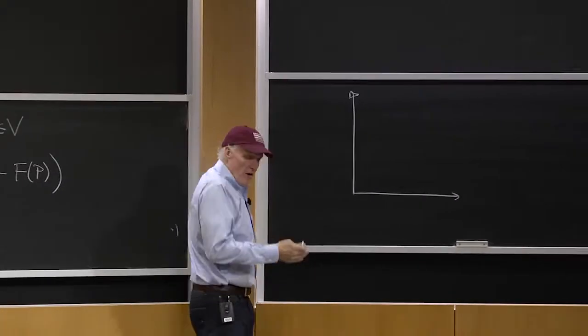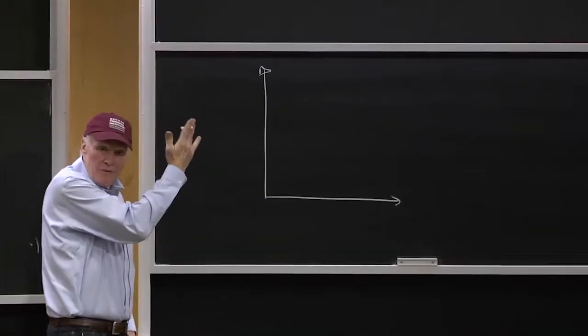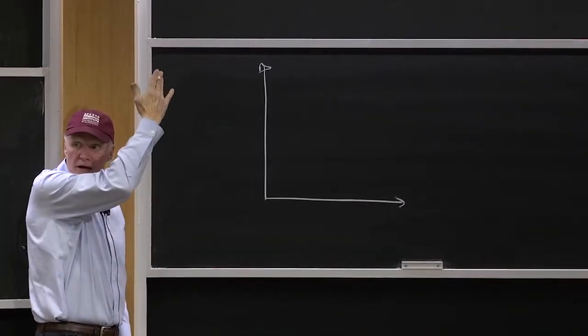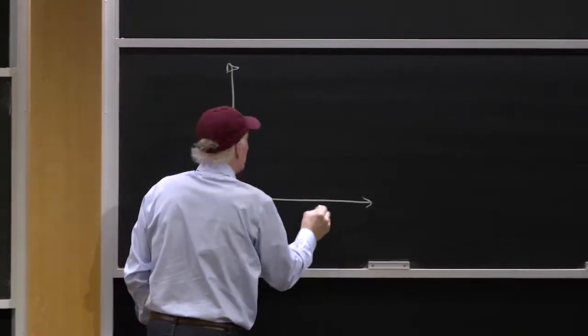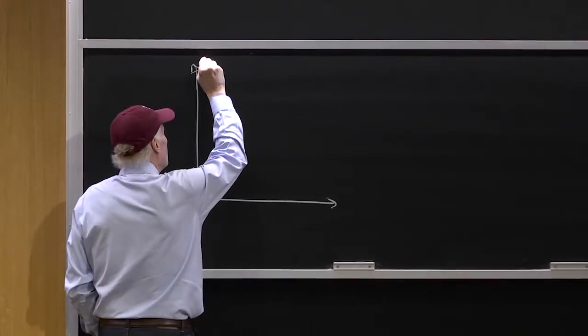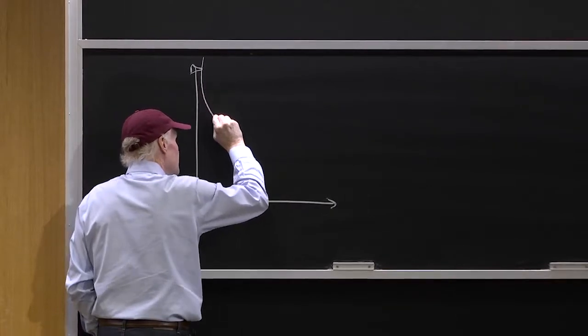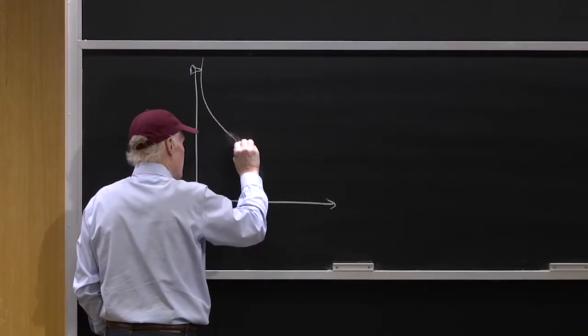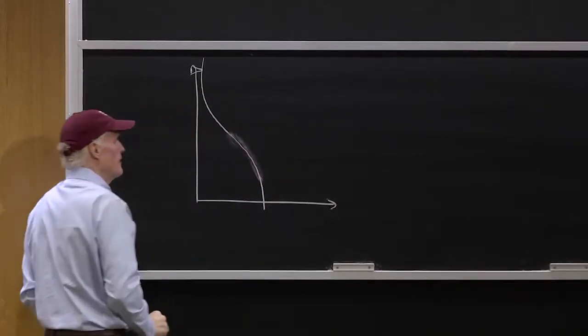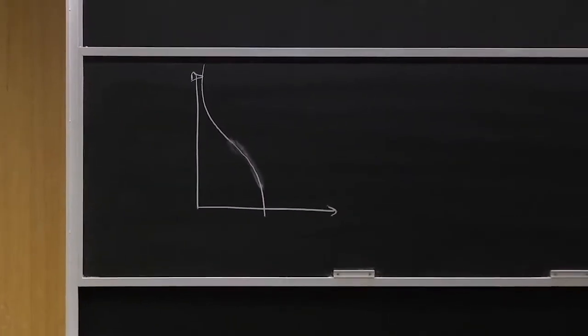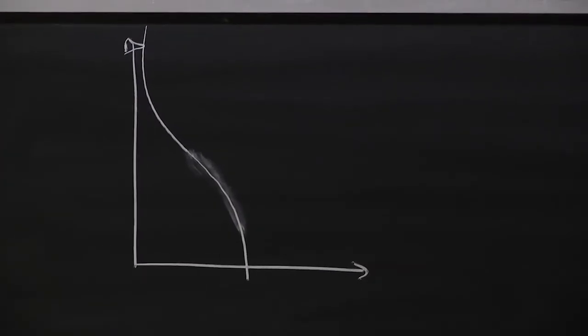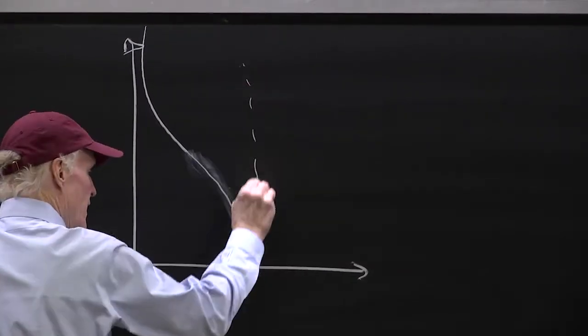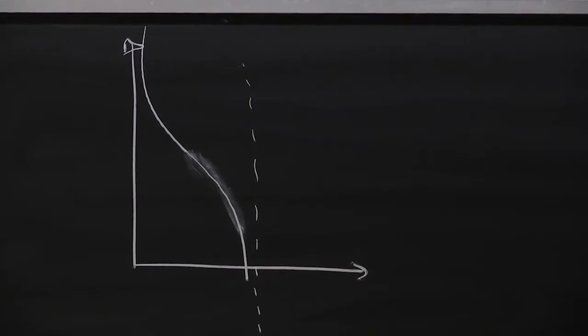Well, remember, our demand curves are all drawn kind of backwards, because we got p on the vertical axis and quantity on this axis. So it would look something like that, right? If it was a normal distribution, where this would be asymptoting to what? What would it be asymptoting to? One? N, N, right? This would go to N.